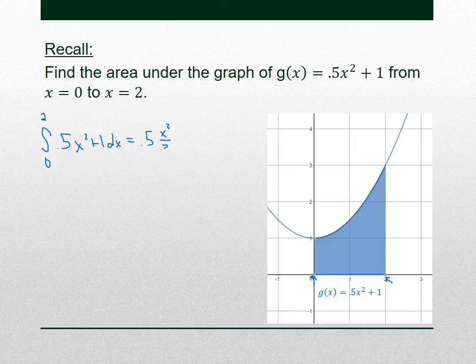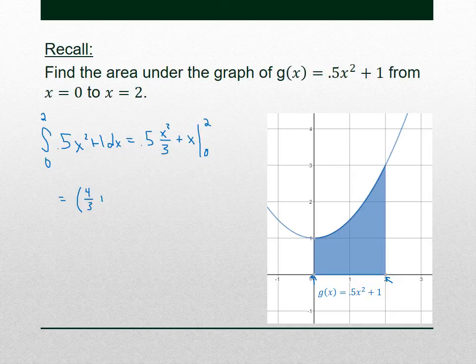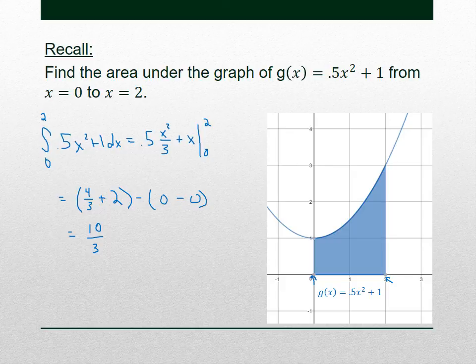Take the antiderivative. The 0.5 comes along for the ride; x² becomes x³/3; and +1 becomes +x. We evaluate that from 0 to 2. When you plug in 2, you get 4/3 for that first term, plus 2. When you plug in 0, you get 0. So 4/3 + 2 = 10/3, which is 3 and 1/3. That's the area of this region shaded blue.